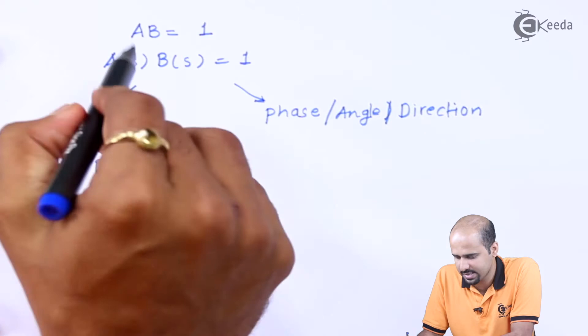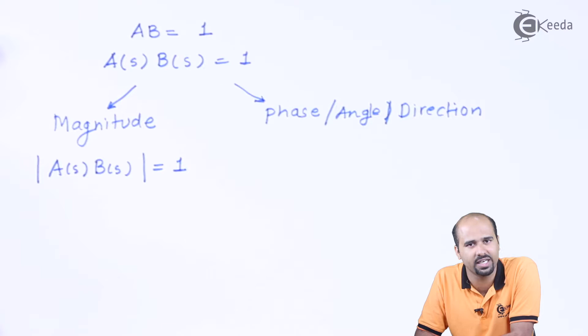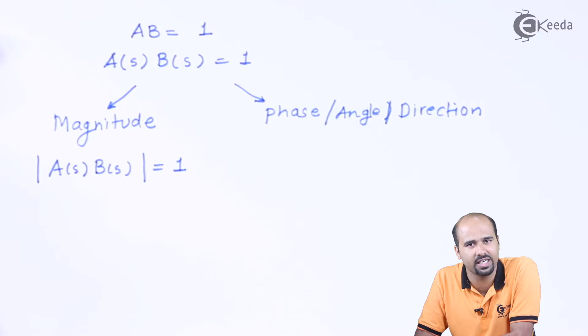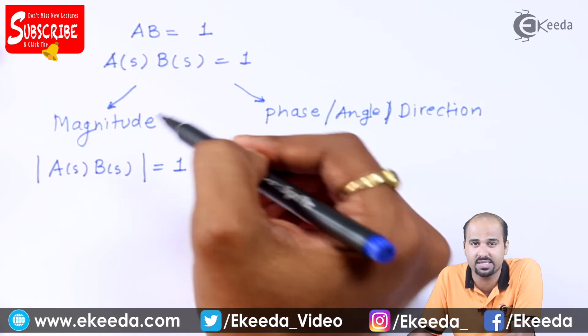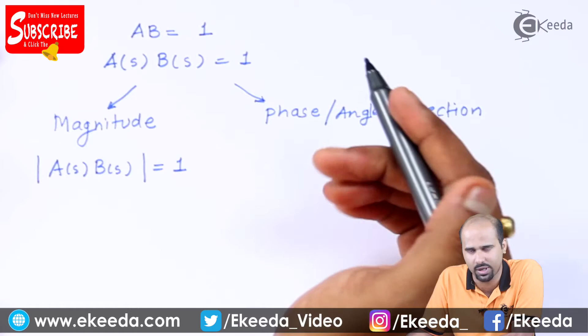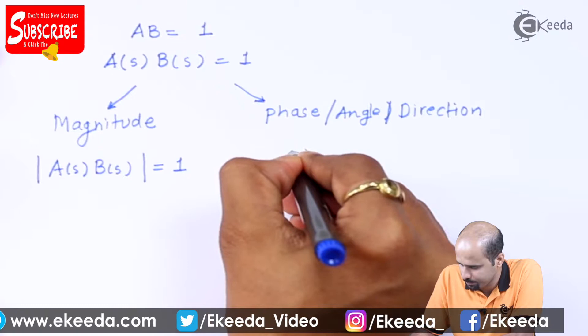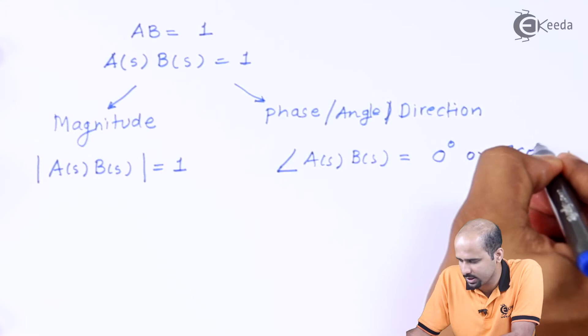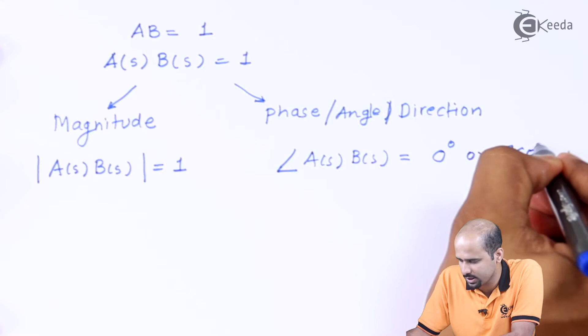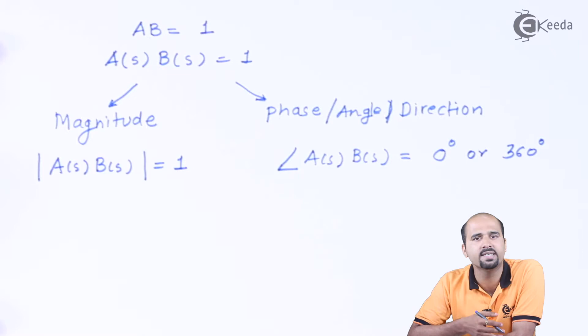Now here I can say that as A(s)B(s) is equal to 1, so it's hidden positive sign which is at the places along with the A. So I can say the phase is presented by the positive sign. Positive sign indicates that there is either 0 degrees or multiplied with 360 degrees. So I can say that the phase angle of A(s) and B(s) is equal to either it is 0 degrees or it is 360 degrees or multiple values of 2π, that is nothing but 4π, 6π, 8π and so on. So even multiples of the π.